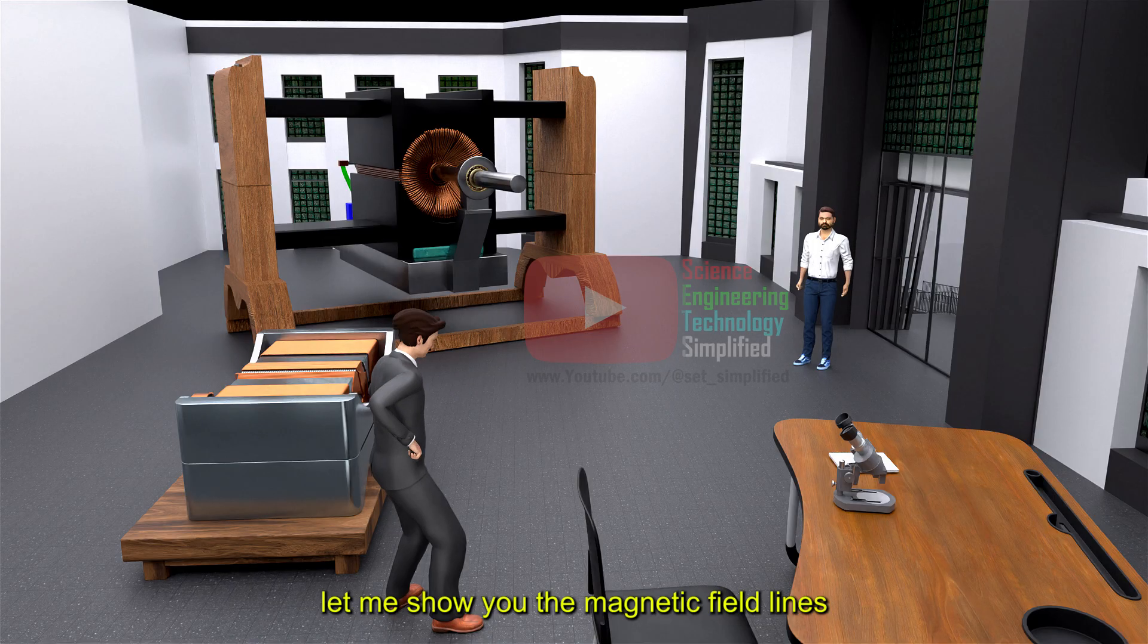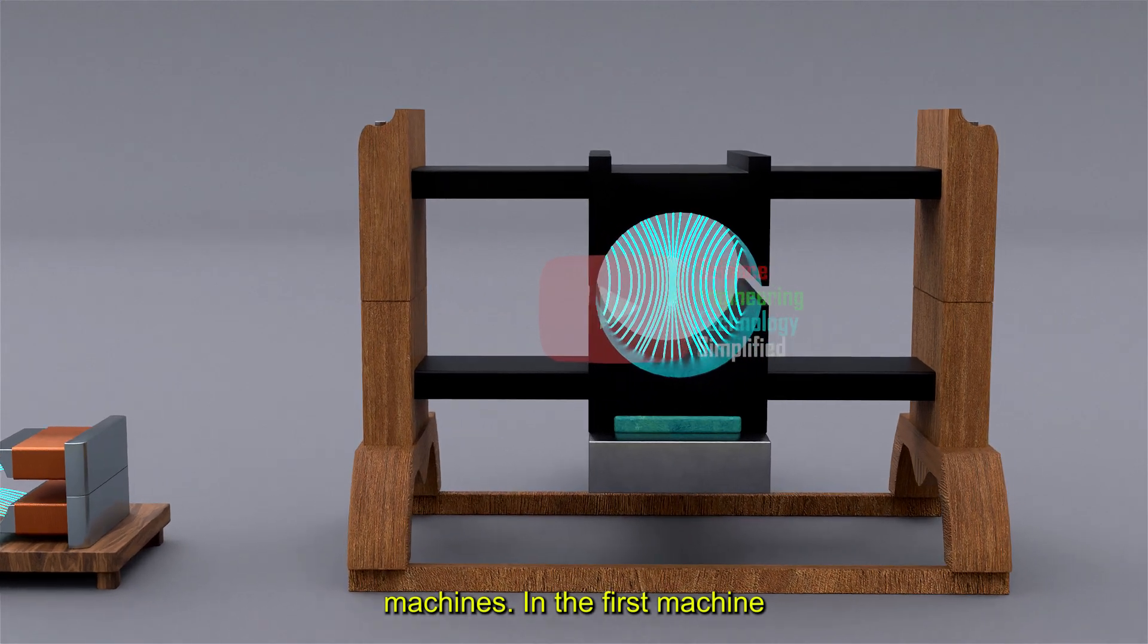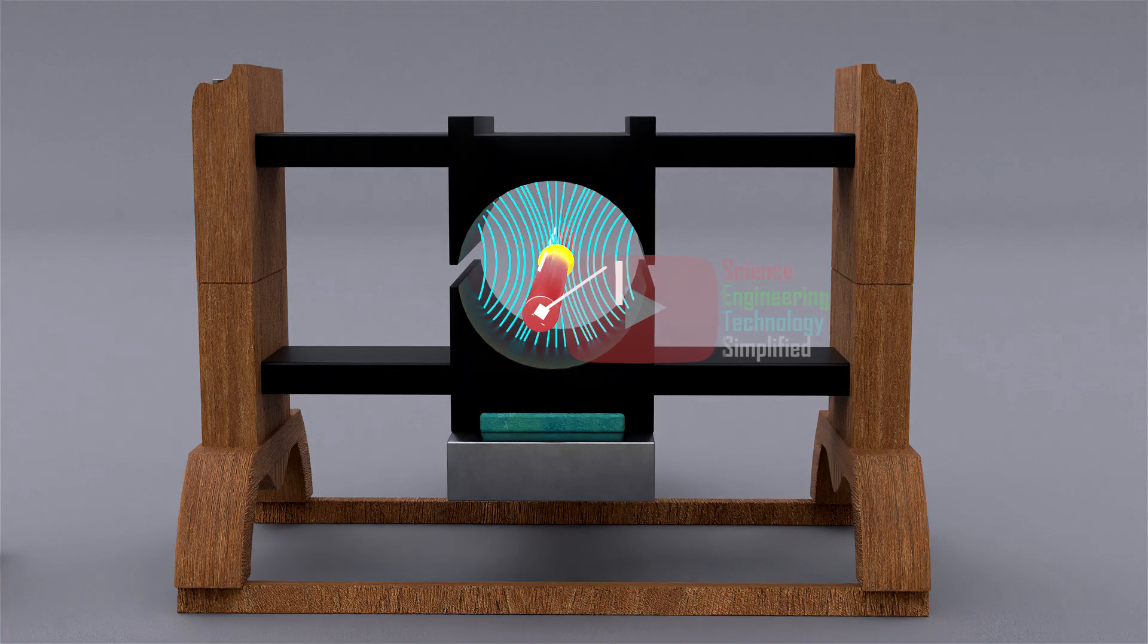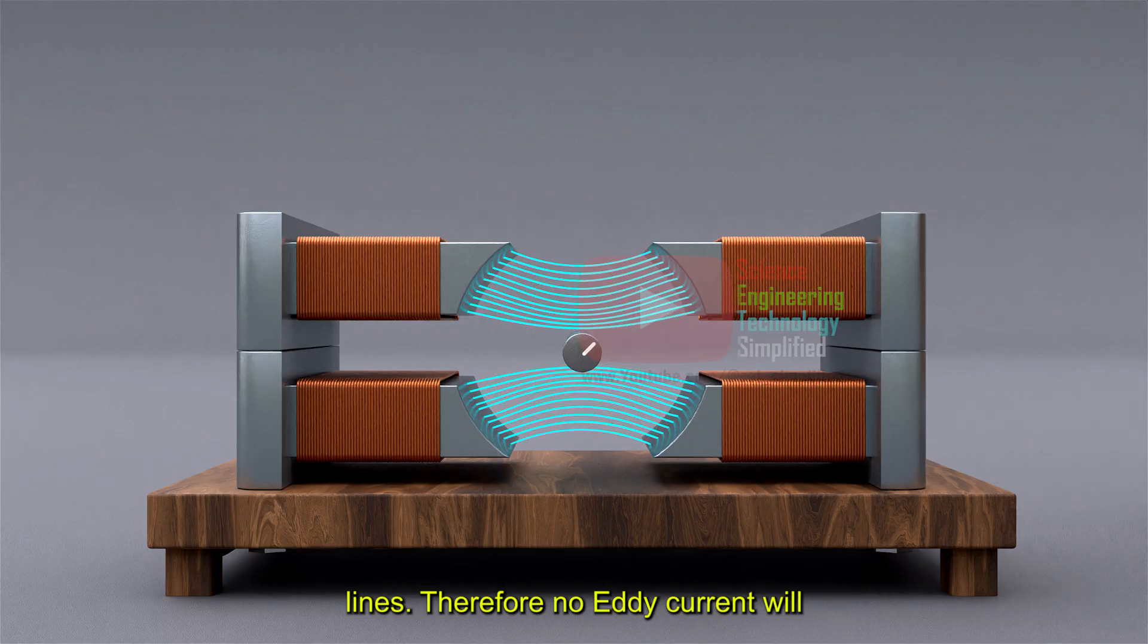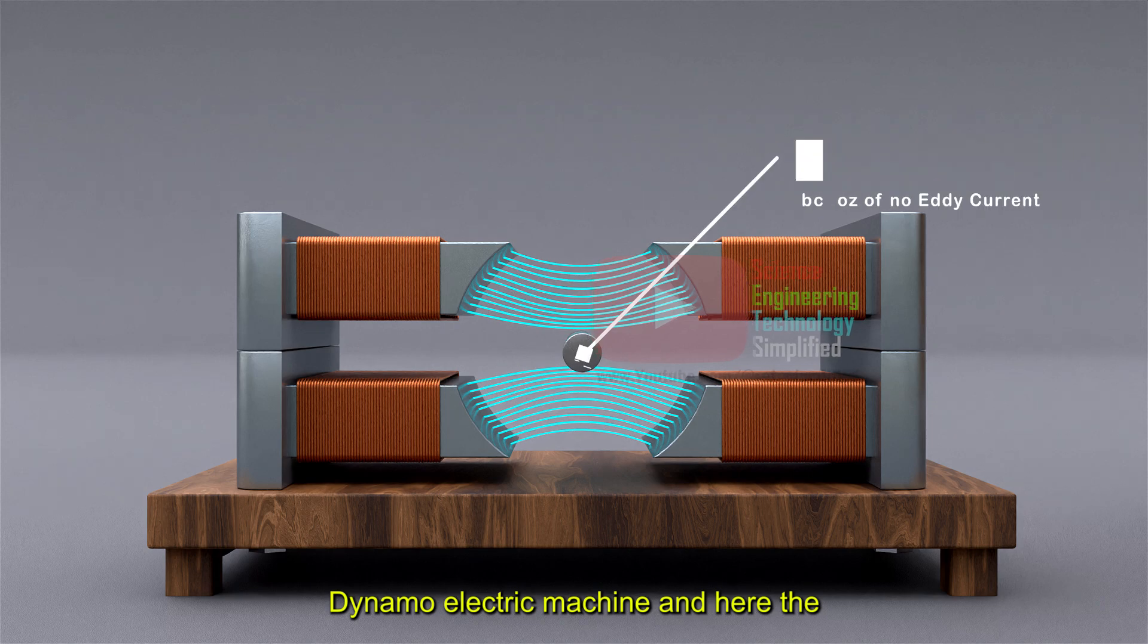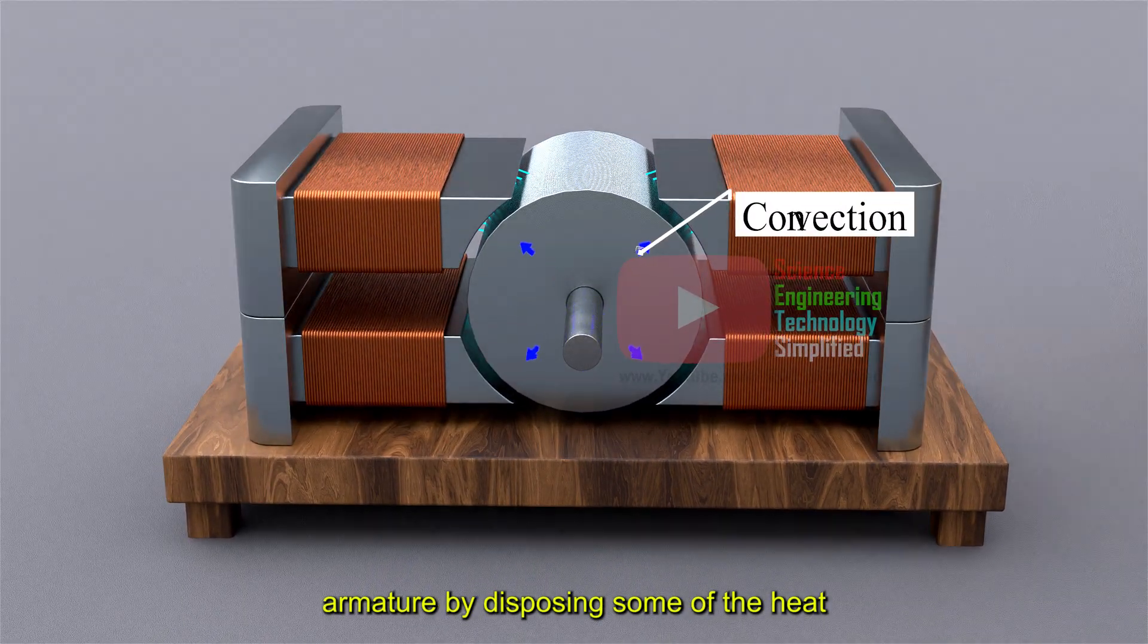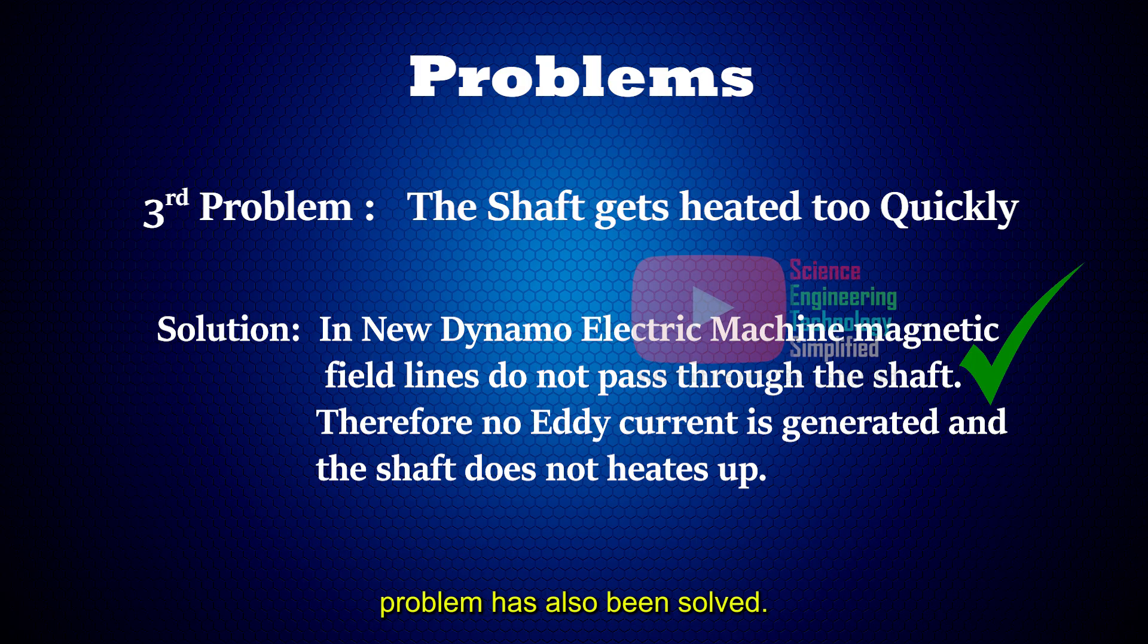Now my friend, let me show you the magnetic field lines in both of these dynamo electric machines. In the first machine, you can see the armature shaft cutting the magnetic field lines. So an eddy current will be generated in the shaft which heats the shaft quickly. But in the second machine, the armature shaft is not cutting the magnetic field lines. Therefore, no eddy current will be generated in the shaft of this new dynamo electric machine, and here the shaft will not heat up. Instead, it will provide some extra surface area for the cooling of the armature by disposing some of the heat into the environment by a process called convection. So your third problem has also been solved.